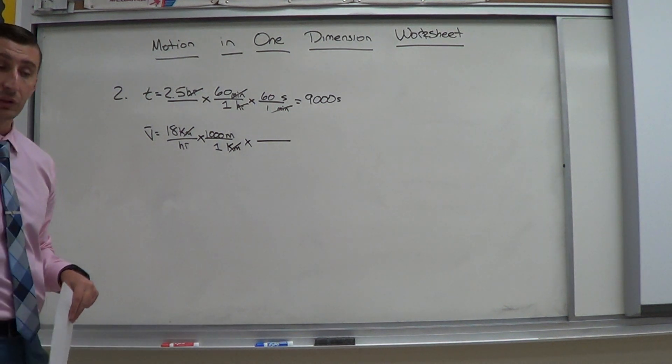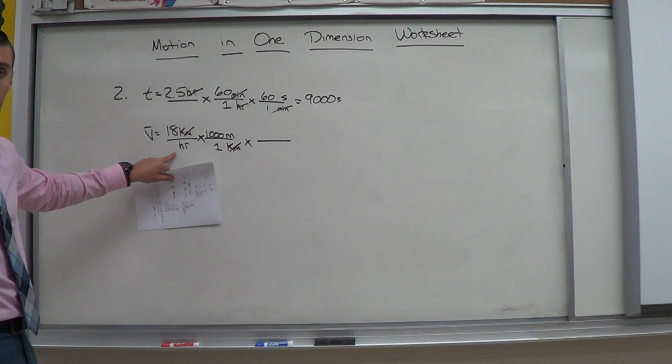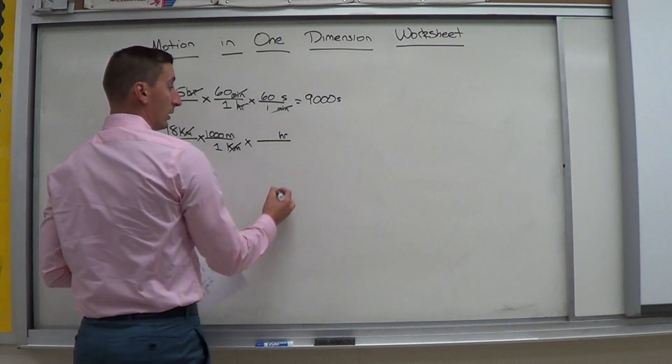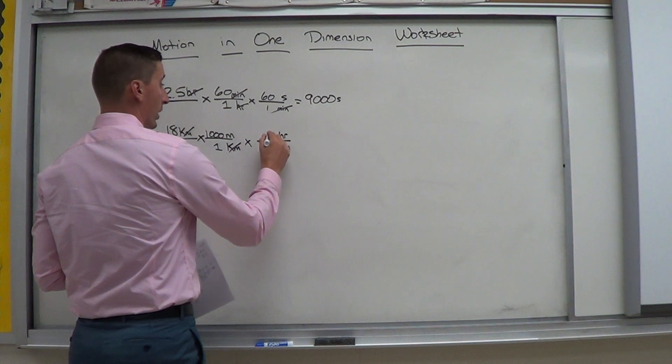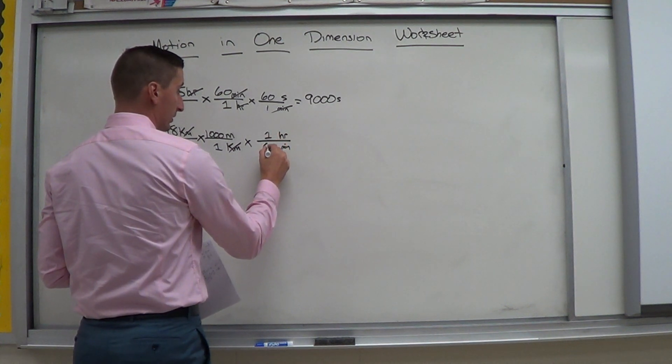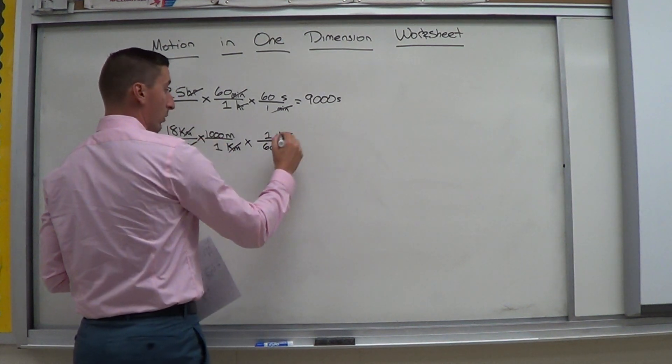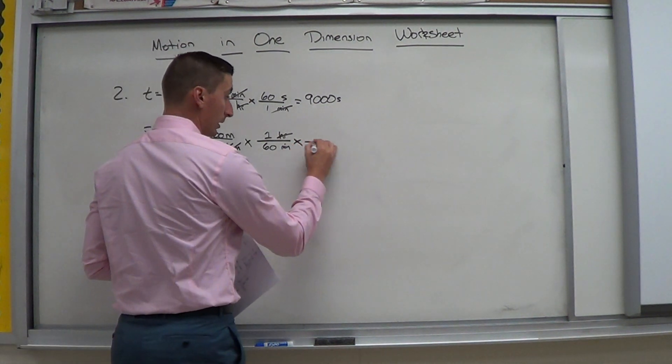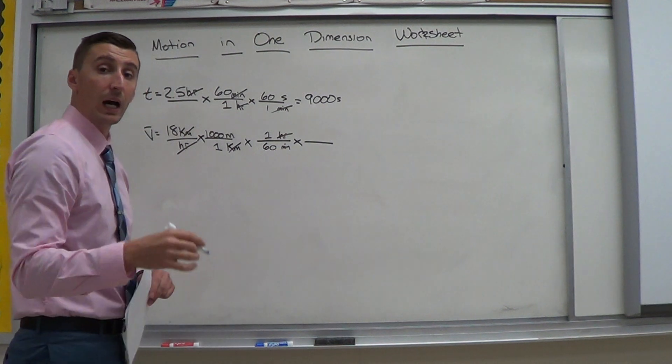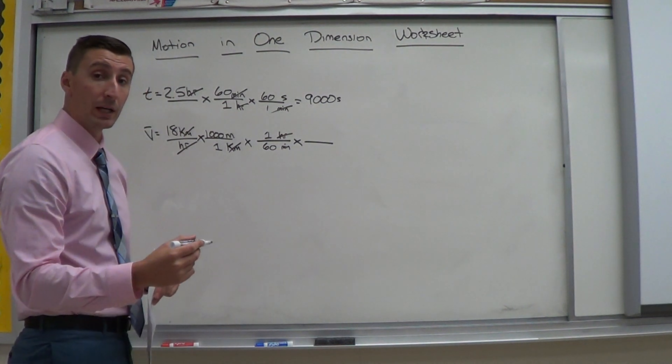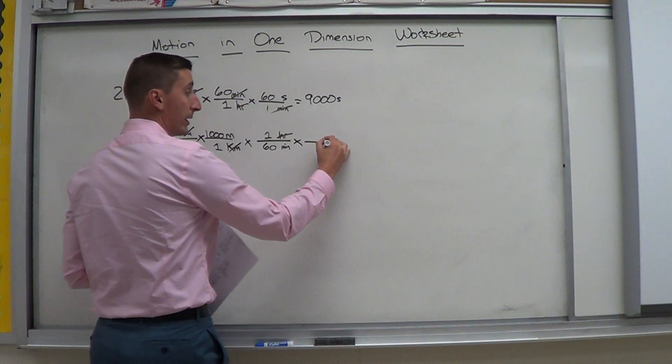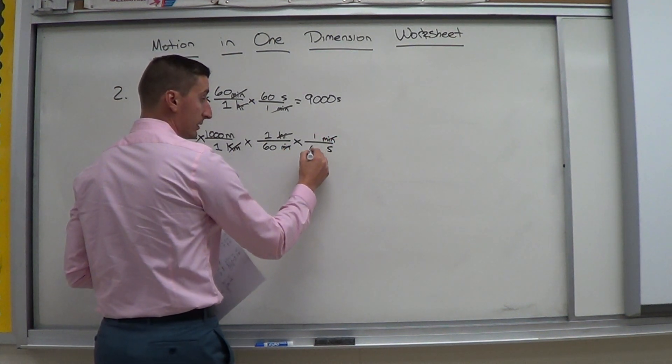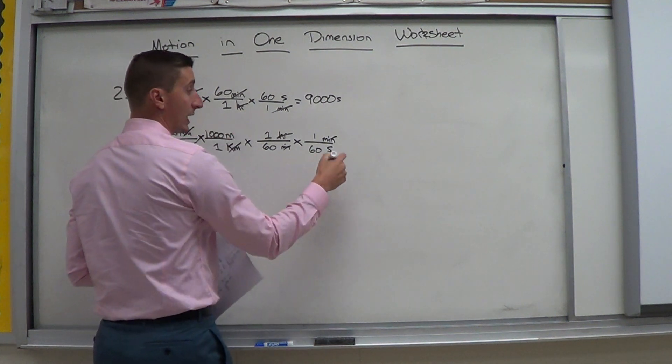Now, I want to get rid of hours. I put it opposite. So if hours are on the bottom, I want to get rid of it. I have to put it on the top. I know one hour is equal to 60 minutes. Hours cancel out. I'm left with minutes. I need to change that to seconds. So I go ahead and do another step. I need to get rid of minutes. It's on the bottom. So I put it opposite to get rid of it. Minutes on the bottom. Minutes go on top. They cancel out. I'm going to seconds. One minute, 60 seconds.